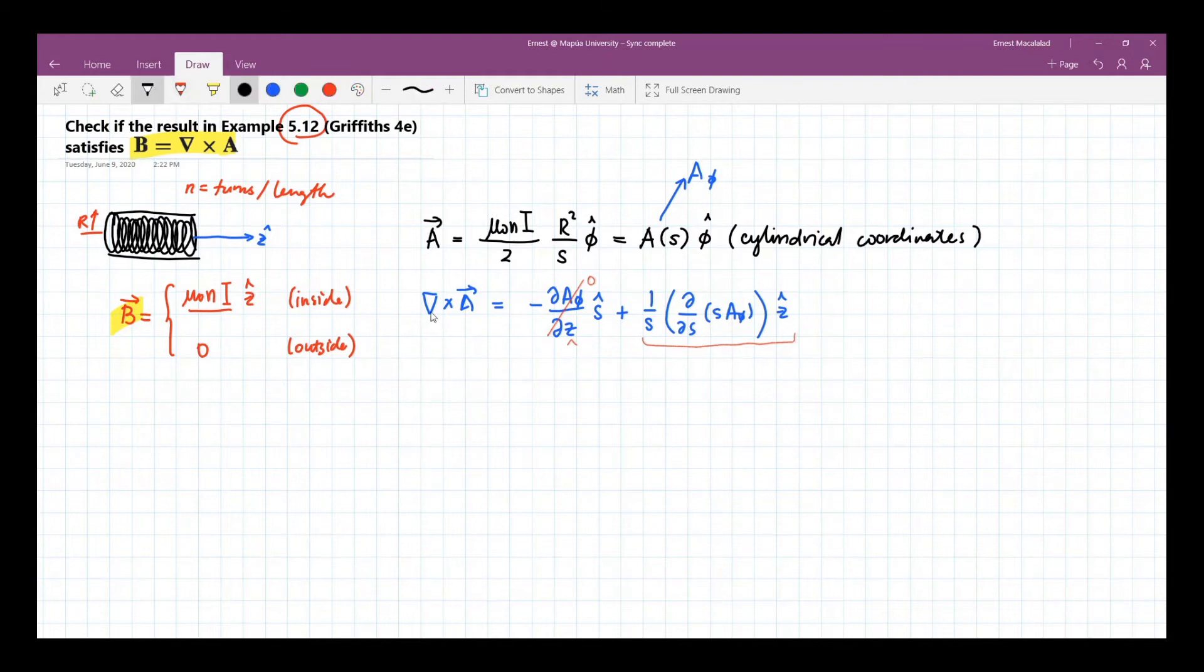So the only thing that will remain is this term. So let's evaluate this. This is 1 over s times derivative with respect to s of s times mu naught n I over 2 times r squared over s z hat. As you will notice, here s is cancelled and everything is constant.